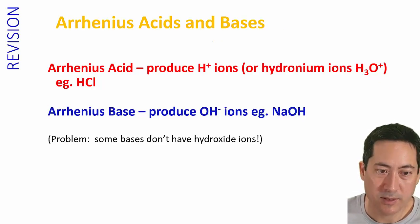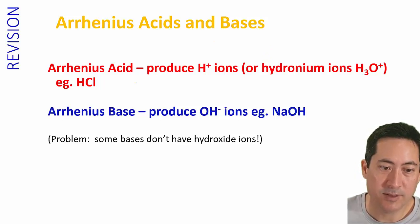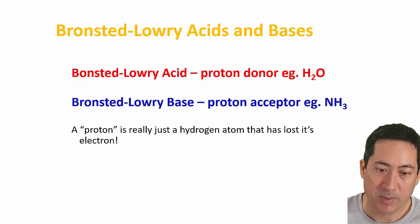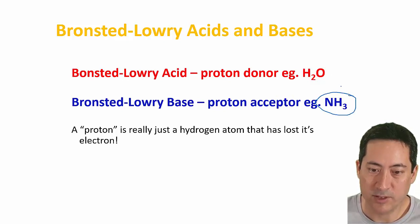Just quickly reviewing Arrhenius acids and bases: Arrhenius acids give off H+, Arrhenius bases give off OH-. Now the problem with that, as I mentioned before, is that some bases do not have OH, so we've modified the definition to be proton donors.